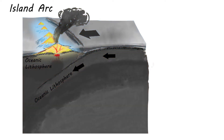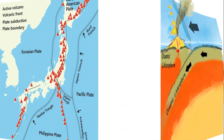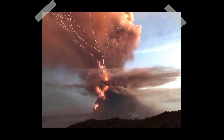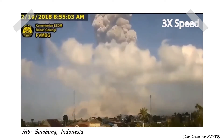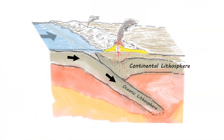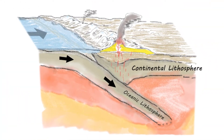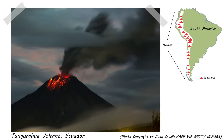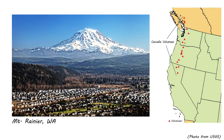A chain of volcanoes is also found above the subduction zone. These volcanoes are called an island arc if they are found in the ocean, like the islands of Japan, the Philippines, or Indonesia. Continental margin volcanoes also make high mountains on land, like the Andes of South America or the Cascade volcanoes of Oregon and Washington.